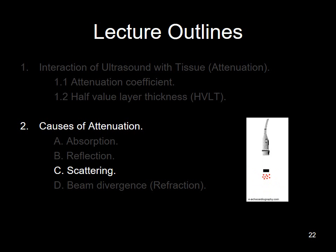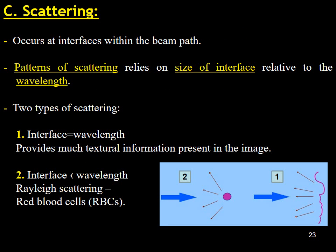The current discussion is about scattering. Scattering is the redirection of an ultrasound beam in multiple directions as a result of interaction with a small reflector or rough surface. Scattering patterns are determined by the size of the interface in relation to the wavelength. There are two types of scattering: number one, the size of the interface is equal to the wavelength — sometimes termed non-specular reflection — which adds a lot of textural information to the image; and number two, the interface is much smaller than the wavelength, known as Rayleigh scattering, which is caused by red blood cells and provides signals for Doppler blood flow assessment. Reflection occurs when the interface is large in comparison to the wavelengths of the transmitted sound.